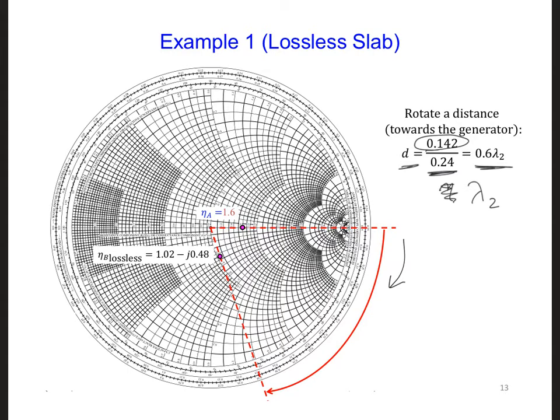So if you remember, 0.5 wavelengths is all the way around the Smith chart. So we're actually going to go all the way around the Smith chart, and then go another 0.1 wavelength. And at the same radius from the center, this will be our eta B.